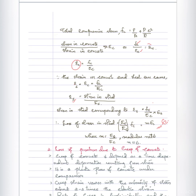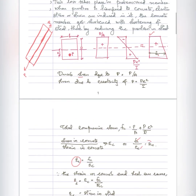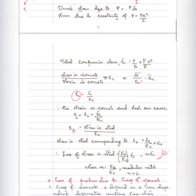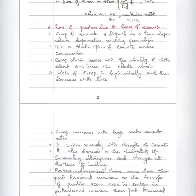The loss of stress in steel is equal to Es by Ec multiplied by Fc, which we can write as the modular ratio m multiplied by Fc. So the loss of stress in steel due to elastic shortening equals m·Fc, where m is the modular ratio Es by Ec, approximately equal to 6.